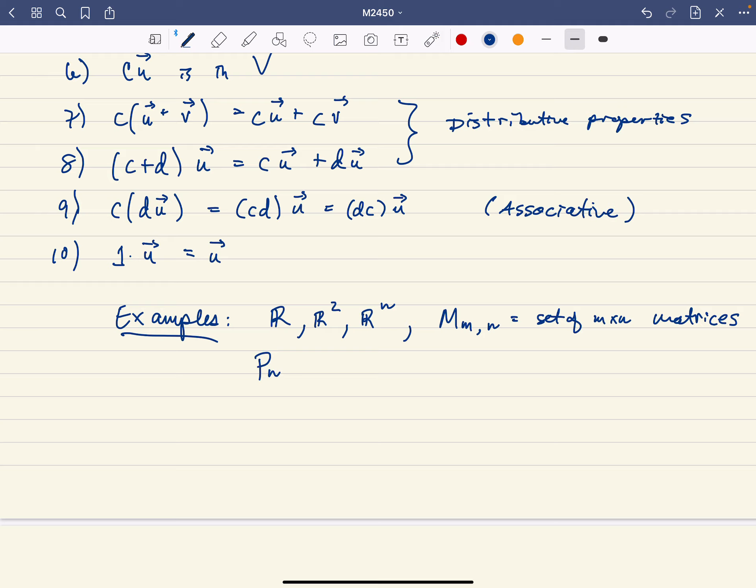Another big example that we'll talk about is the set of polynomials of degree at most n. The set of polynomials of degree exactly n turns out not to be a vector space, and we'll talk about why soon. But if P sub n is the set of polynomials of degree less than or equal to n, that's a good vector space. Here, vector addition, just to point out.